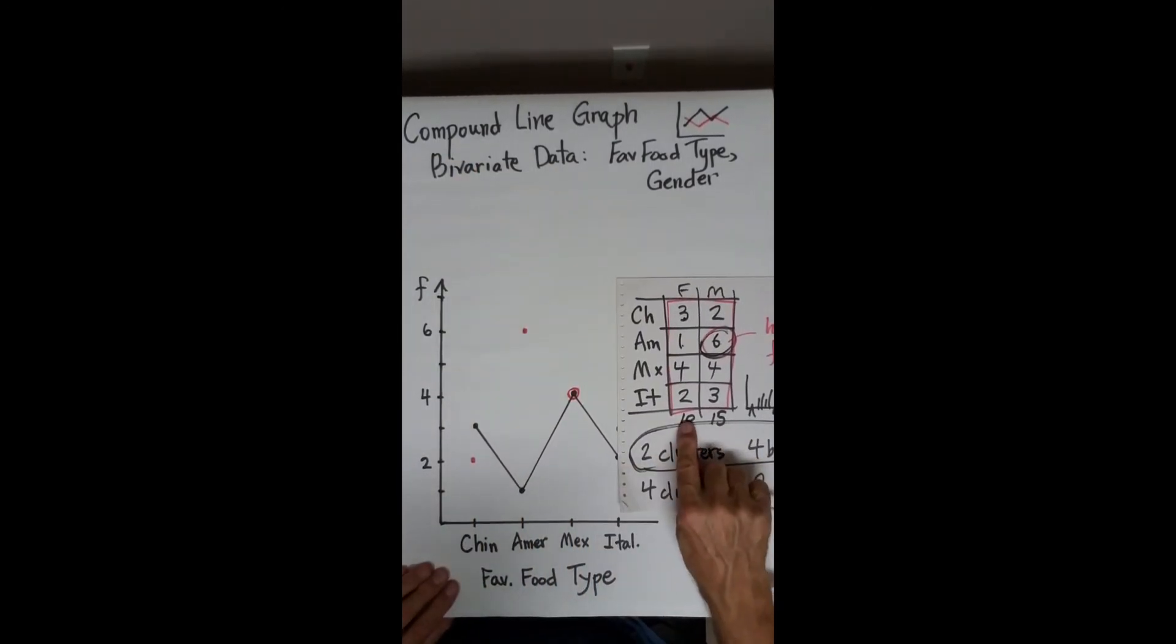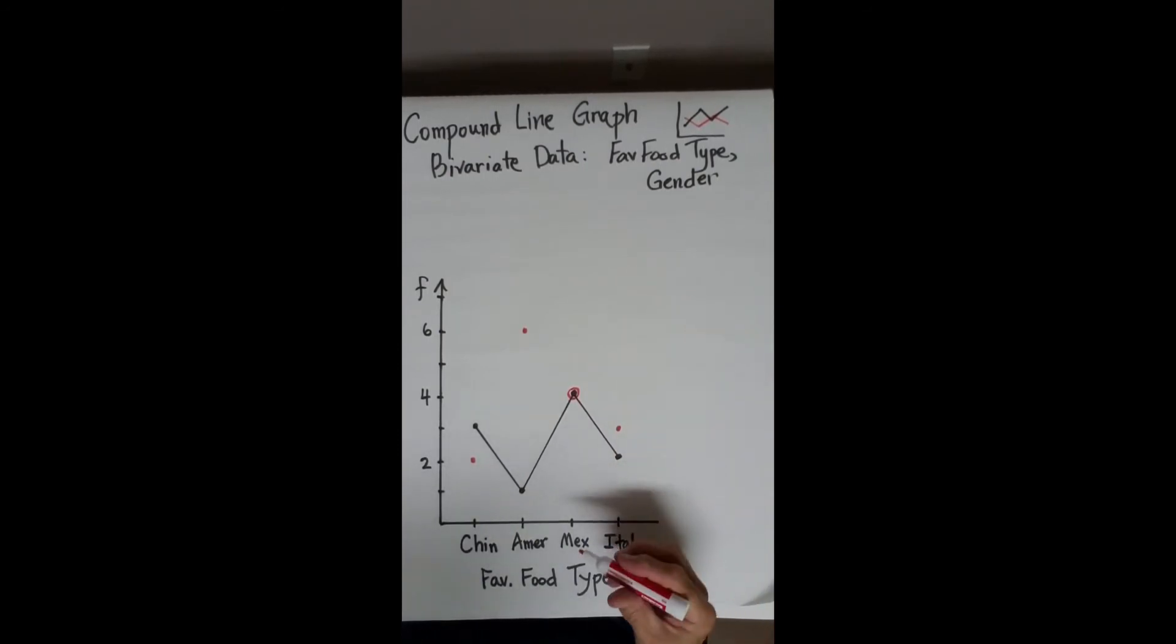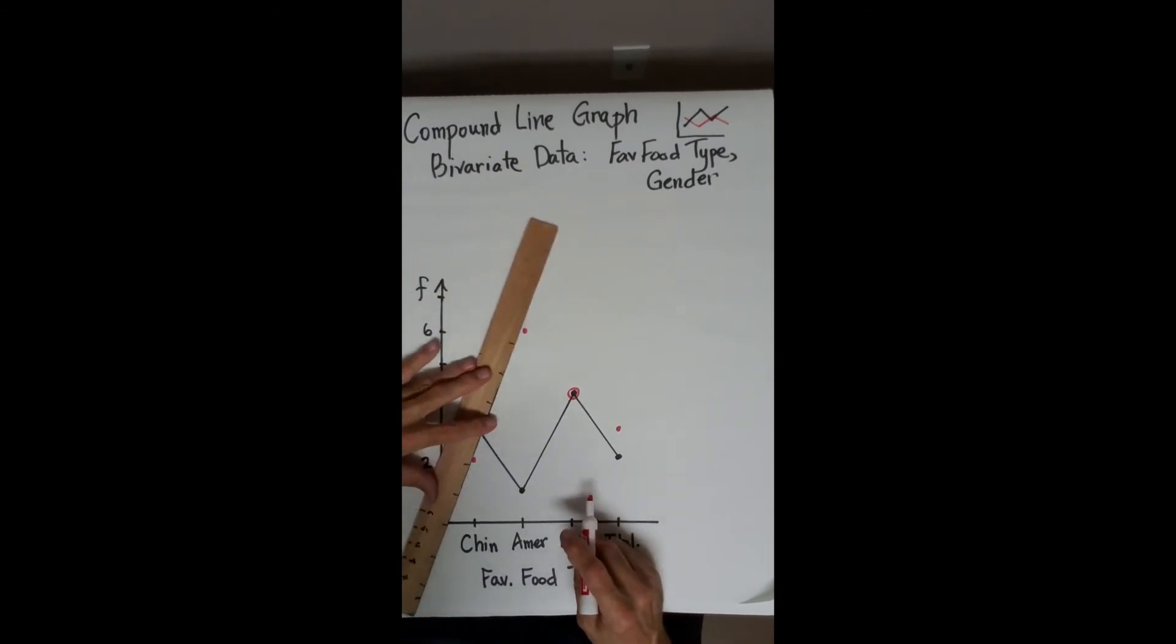In our problem, you had ten females, fifteen males. So you might expect the male line to be higher than female. That's fine. So connect those.